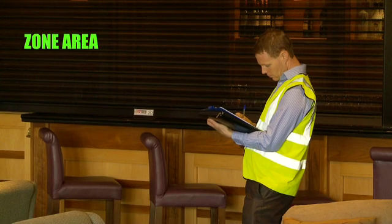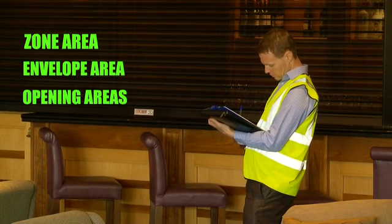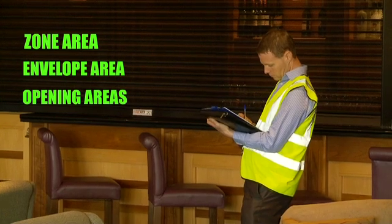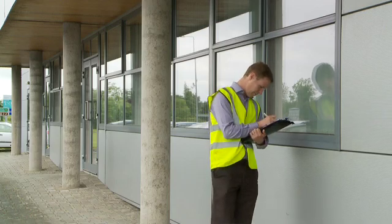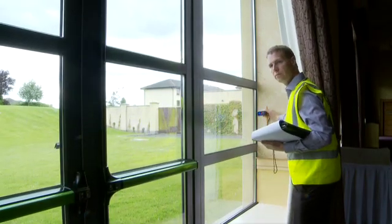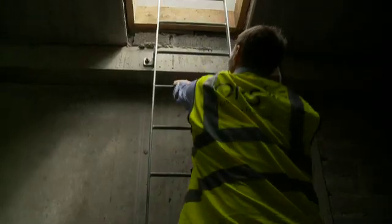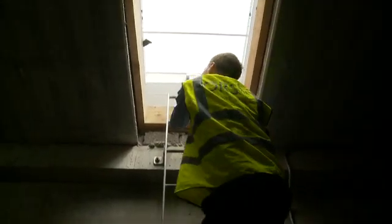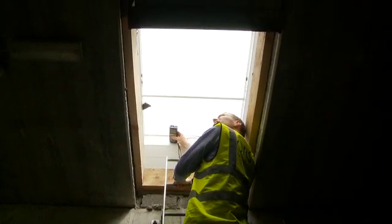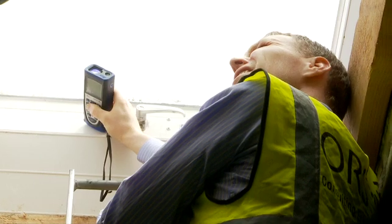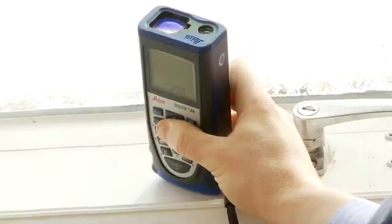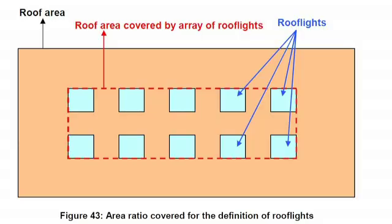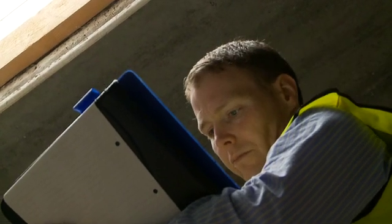The assessor must also determine the zone area, envelope area, opening areas and associated orientations. The external window area is the structural opening in the wall or roof; this area includes the glass and frame areas. For roof lights in particular, the assessor must be careful in using default values for the surface area ratio and area ratio covered, particularly in conditioned zones or zones with automatic daylight controls. The assessor must determine the surface area ratio for the roof lights, which is the ratio of the roof area covered by an array of roof lights to the total area of roof light glazing.